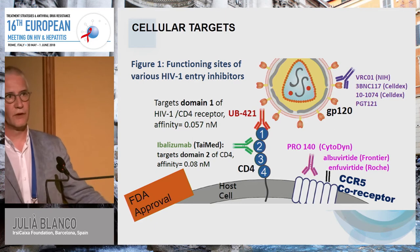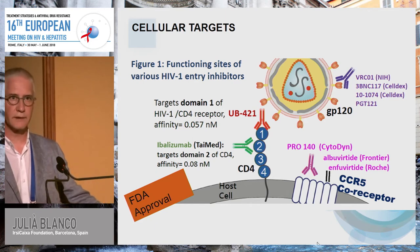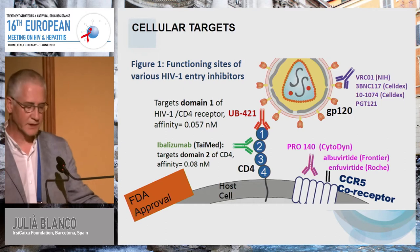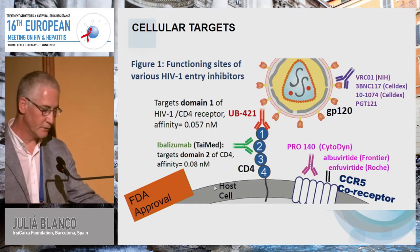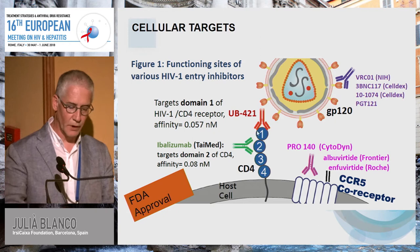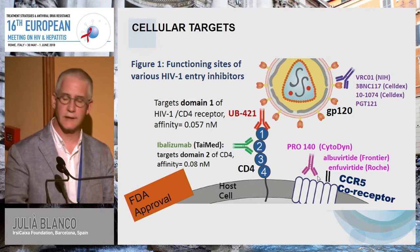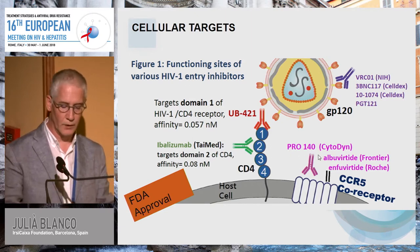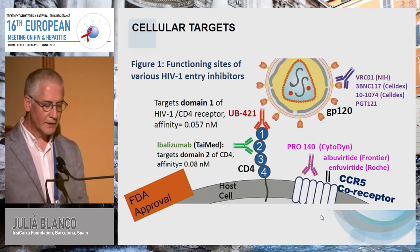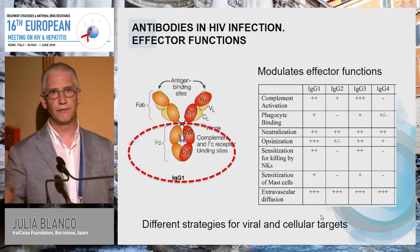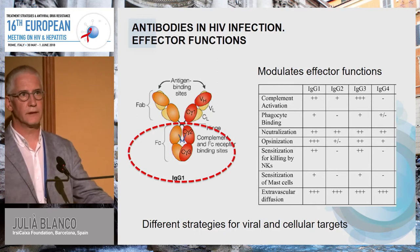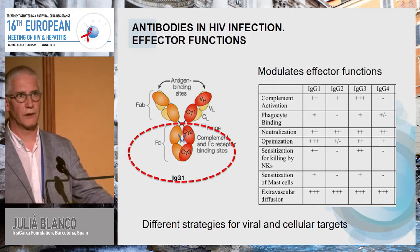Besides the envelope, other cellular targets may be used to develop antibodies. We have seen the case of Ibalizumab, an antibody that blocks entry by binding to CD4. There is also UB-421 that blocks HIV attachment to CD4, and Pro140, an antibody against CCR5.